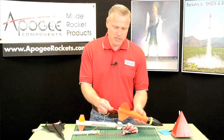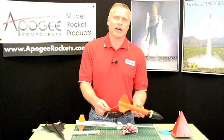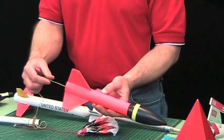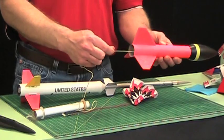Kevlar, the advantage of it is it's very strong and it has a lot of heat resistance. So unlike a rubber shock cord, it's not going to degrade over time. So your rocket will last a long time.